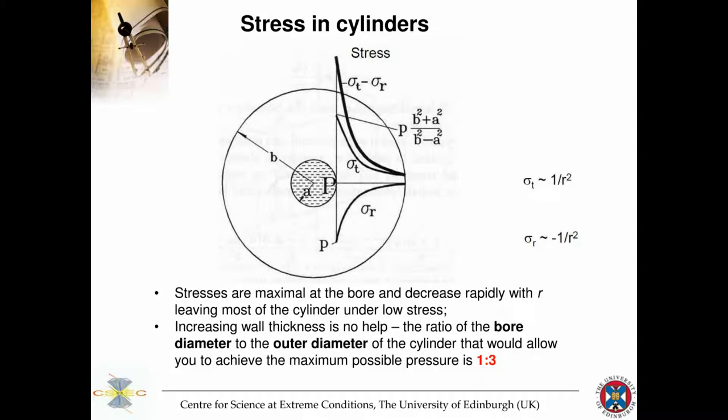There's a useful ratio to remember: the ratio of inner bore diameter to outer cylinder diameter of 1 to 3 allows you to achieve maximum pressure for minimum dimensions. That means you can take the cylinder to a pressure equivalent to the yield strength — the strength at which the material enters large plastic deformation — and achieve that pressure in the bore. You can't go any higher, because then the cylinder would burst.